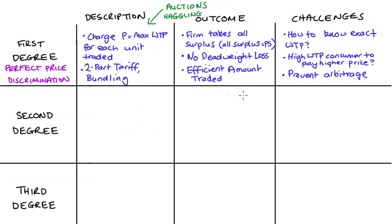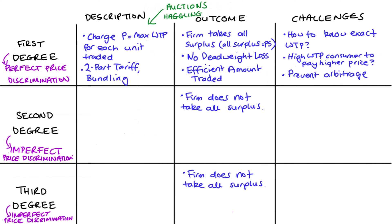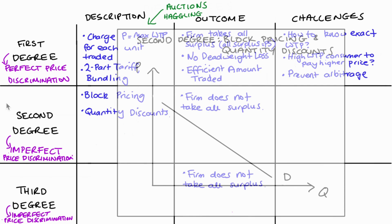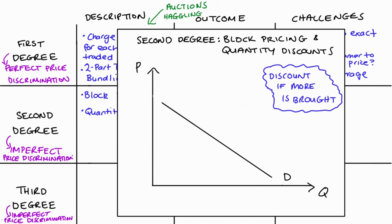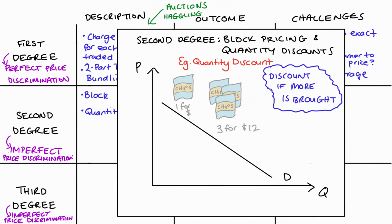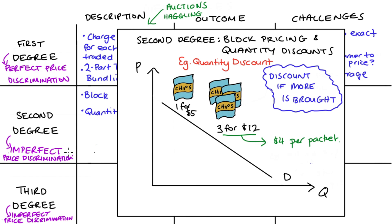In comparison to first degree, second and third degree price discrimination are examples of what we call imperfect price discrimination, since they don't perfectly grab all the surplus in the market. Let's talk about second degree first. Quite a few textbooks only discuss second degree in terms of quantity discounts or block pricing. Both of these methods give a discounted per-unit price if the consumer buys more. For example, we might sell packets of chips: a single packet for $5, or three packets for $12 — an average price of $4 per packet — giving us two different per-unit prices.